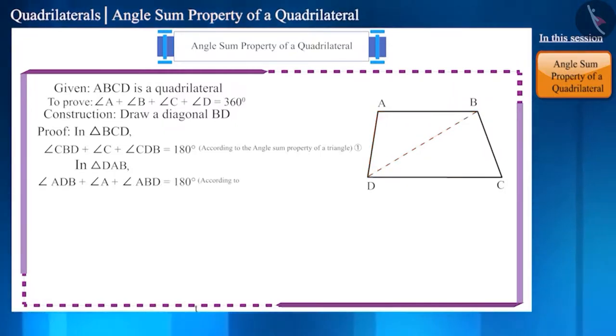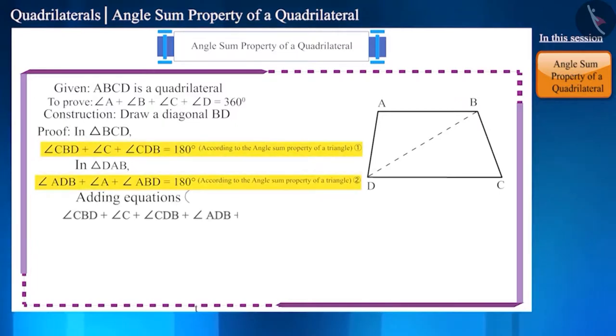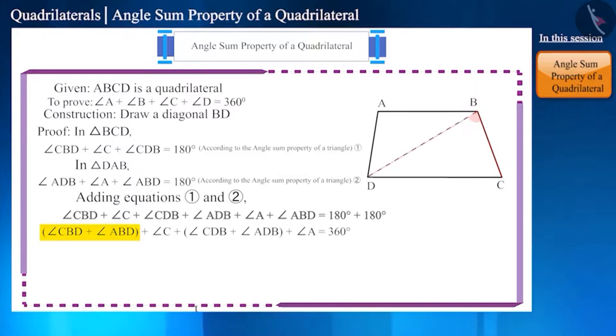Adding equations 1 and 2, we get: when we add angle CBD and angle ABD we get angle B. Similarly, on adding angle CDB and angle ADB we get angle D. We can also write it in this way: